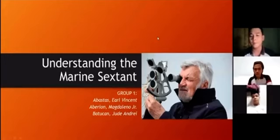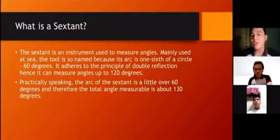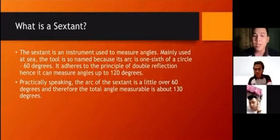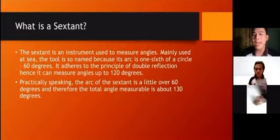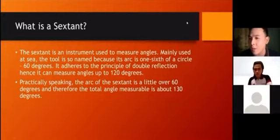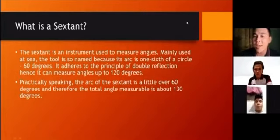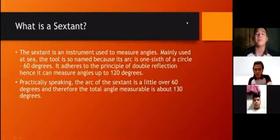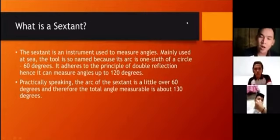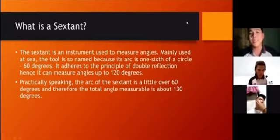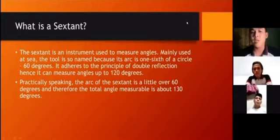A sextant is an instrument used to measure angles mainly used at sea. The tool is named because its arc is one-sixth of a circle which is 60 degrees. It adheres to the principle of double reflection, hence it can measure angles up to 120 degrees. Practically speaking, the arc of the sextant is a little over 60 degrees and therefore the total angle measurable is about 130 degrees.